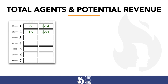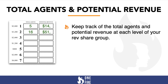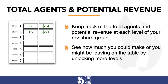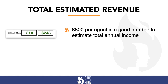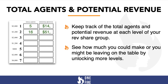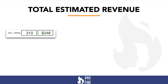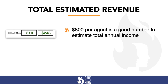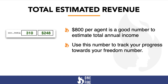In this area, you track all your total agents and potential revenue. Keep track of the total agents and potential revenue at each level of your rev share group to see how much you could be making — or might be leaving on the table — by unlocking more levels. Total estimated rev share is $800 per agent, which is a good number to estimate total annual income. For example, if you have 310 total agents, multiplied by $800 per agent, that's $248,000 annually. Use this number to track your progress towards your freedom number.